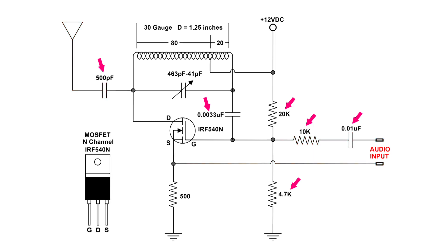Here's the changes. You can see that the top bias resistor is now 20k, and the bottom one is now 4.7k. I've added in the audio circuit a 10k and a 0.01 microfarad capacitor, and the feedback capacitor running from the feedback coil to the gate is now 0.0033 microfarads. Added an antenna and a 500 picofarad capacitor.